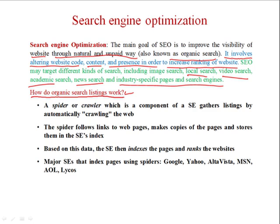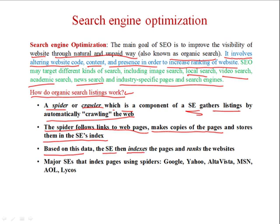Now I will cover how organic search listings work. If we are not considering paid search, first a spider or crawler crawls the entire web content. This component of a search engine gathers listings by automatically crawling the web, collects all pages available on the net, follows links to web pages, makes copies of pages, and stores them in the search engine's index. Based on this data, the search engine indexes the pages and ranks the websites.